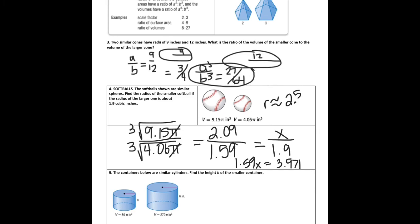The containers below are similar solids. Find the height of the smaller container. So I see that the volume of the small cylinder is 80π, the volume of the larger cylinder is 275. The first thing I'm going to do is get rid of the π's, and I'm going to divide them both by 10. So to find their similarity ratio, I'm going to take the cube root of 8 over the cube root of 27, and that gives me 2 over 3.